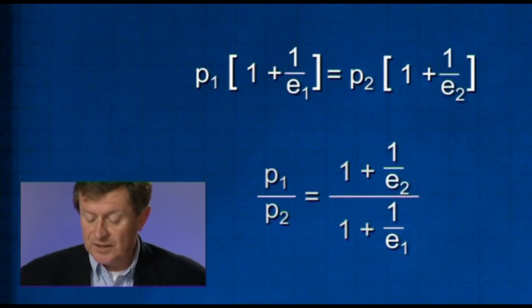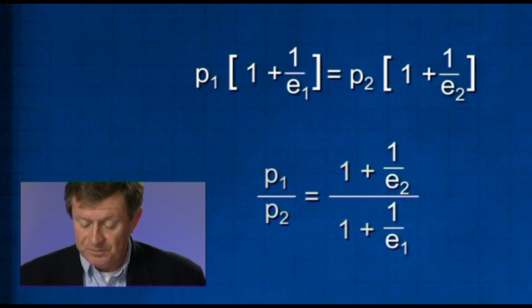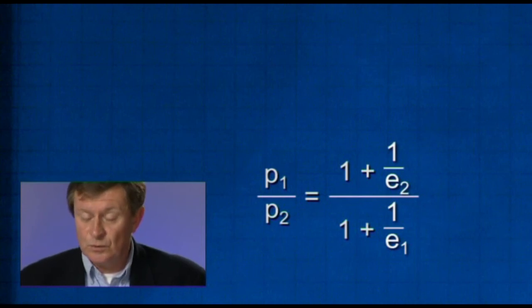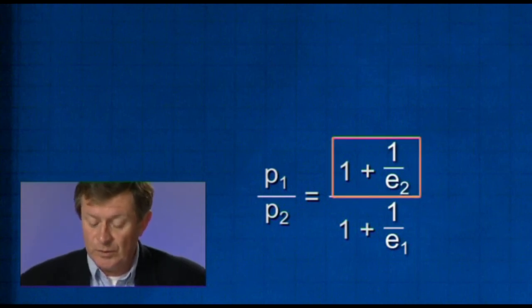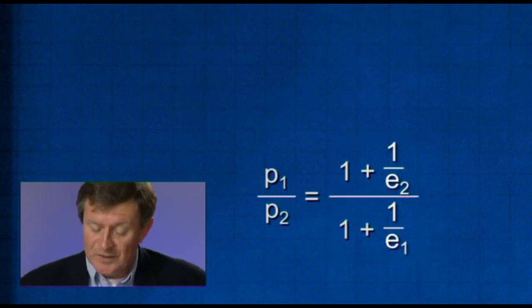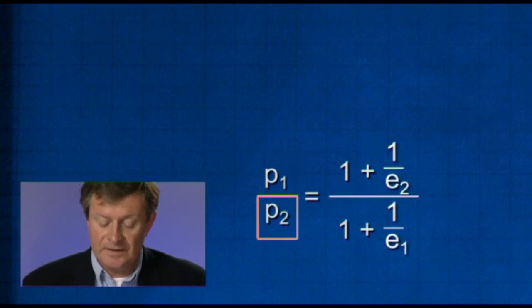The ratio of the prices is equal to this expression relating to the two elasticities. And we can see, therefore, that if the elasticity of demand is higher in market 2, where the elasticity is E2, this expression here will be greater than this expression here, which means the price in market 1 will be set higher than the price in market 2. The only situation in which it would be optimal for the prices to be the same would be if these two elasticities of demand were equal to each other.